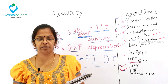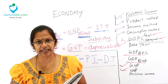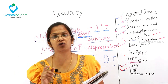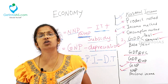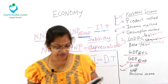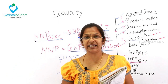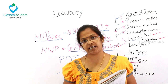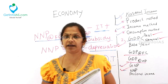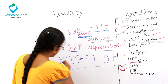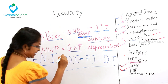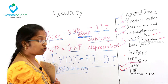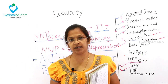Per capita income — when you take the newspaper, you would often see the word per capita income. Per capita income is the total national income of a country divided by the total population. We call this as per capita income.